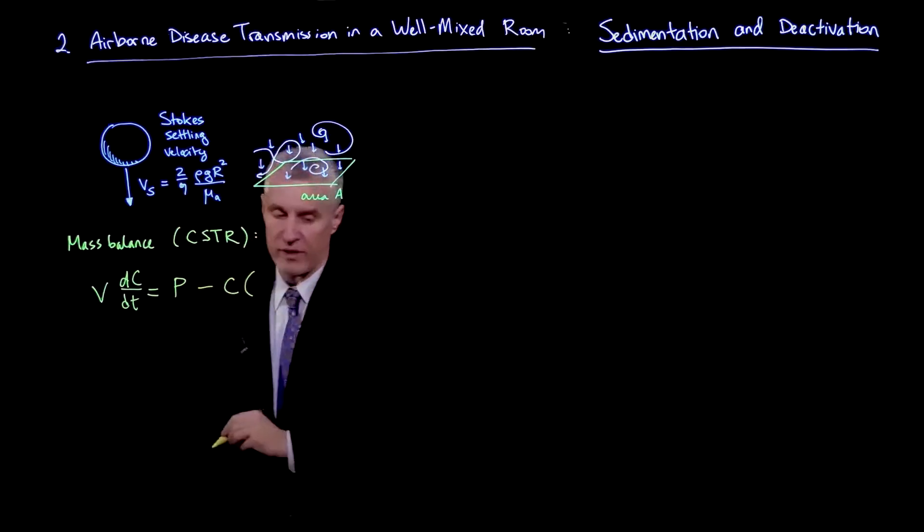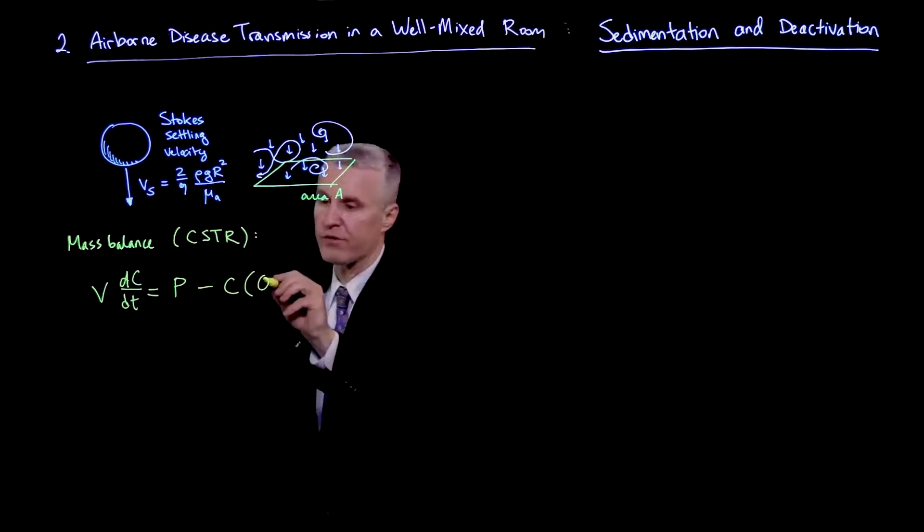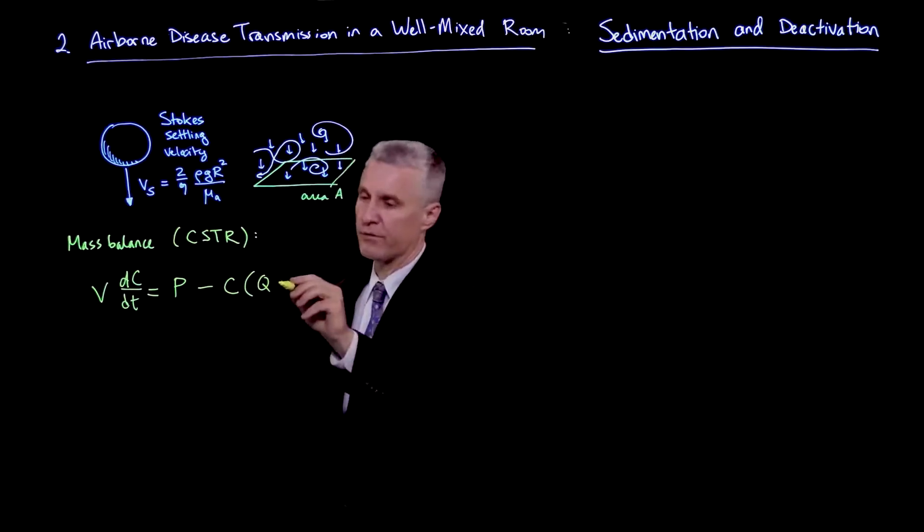is the production rate P minus a flux, which is a flow rate times a concentration. And there are several flow rates here. There is Q, which is ventilation. There is filtration, which is PF*QF.